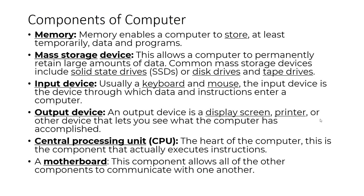Components of a computer: we have memory, mass storage devices, input devices, output devices, central processing unit (CPU), and motherboard. Memory enables a computer to store, at least temporarily, data and programs.